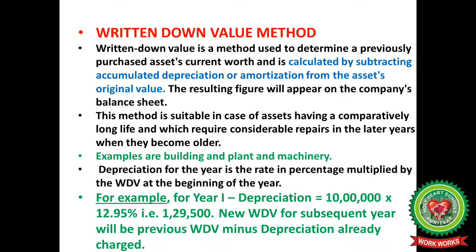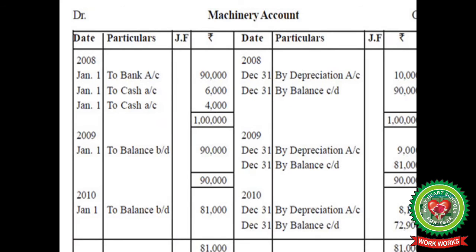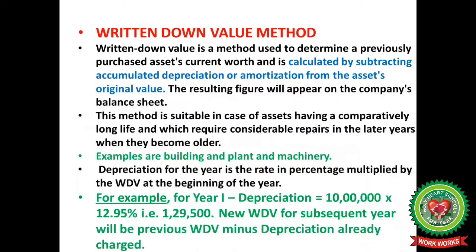Depreciation for the year equals the rate in percentage multiplied by the written down value at the beginning of the year. For example, if the value of an asset is Rs 10 lakh and the rate of depreciation is 12.95%, the amount of depreciation comes out Rs 1,29,500. The new written down value for the subsequent year equals previous written down value minus depreciation already charged — as we have done: 1 lakh minus 10,000 equals 90,000; 90,000 minus 9,000 equals 81,000; 81,000 minus 8,100 equals 72,900.